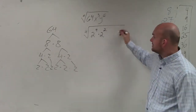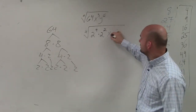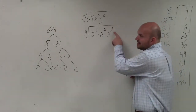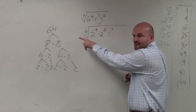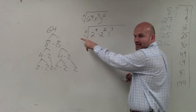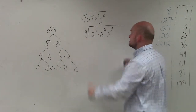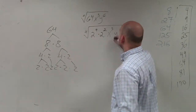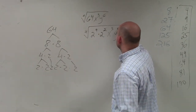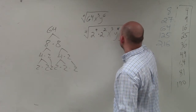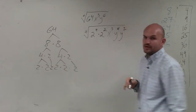Then I can do the same thing. Notice that this number is smaller than my index, so I can't simplify this. However, y to the sixth I can write as y to the fourth times y squared.